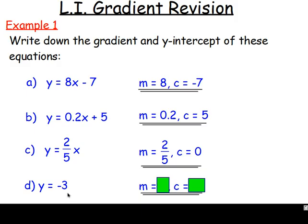And the last one here for d. You've got y equals negative 3. Again, think about the gradient, the y-intercept. What's the gradient? What would you have for that? You would have 0. And for c, the y-intercept, that's the number on its own. Well, the number on its own is a negative 3. There's 0x, which is why that's 0. And the number on its own is negative 3.